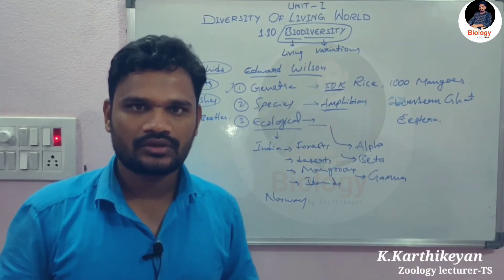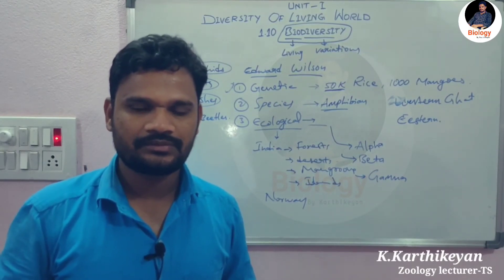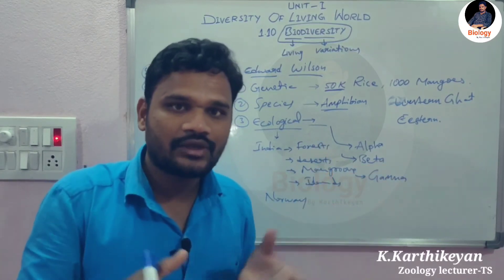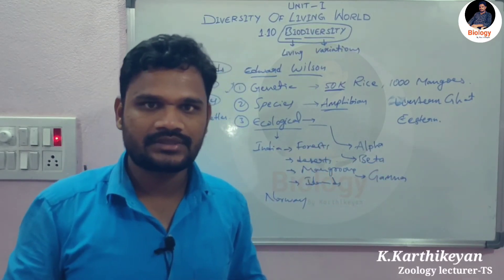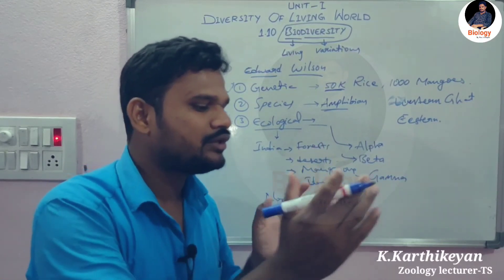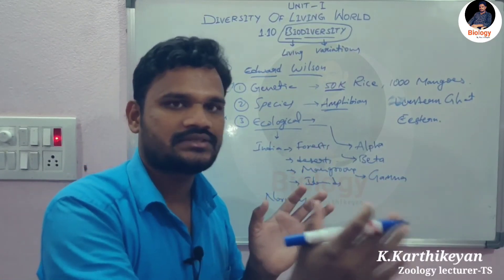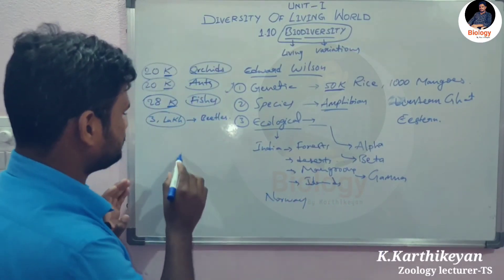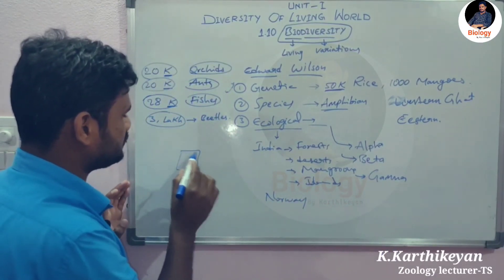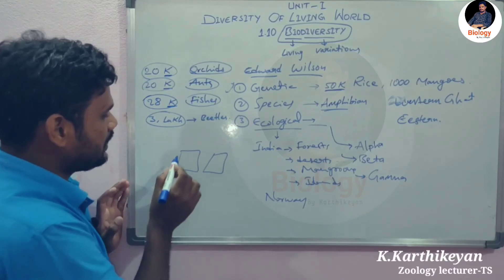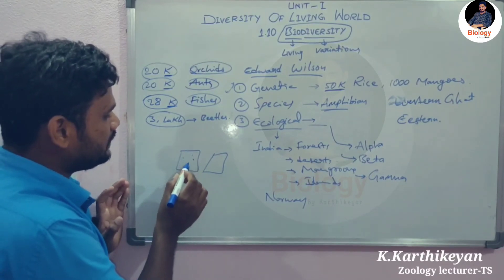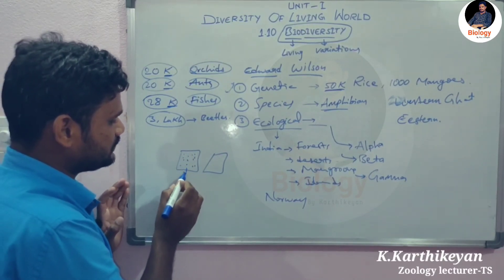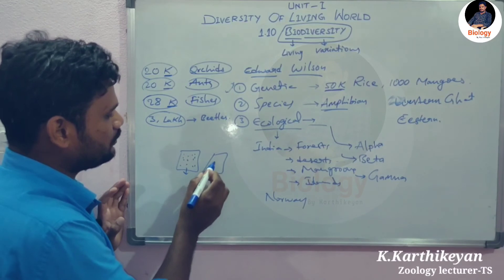Beta ecological biodiversity refers to variations in living organisms between two adjacent ecosystems — for example, how many species are present in one ecosystem compared to how many are in a neighboring ecosystem. The differences between those two adjacent ecosystems represent beta ecological biodiversity.